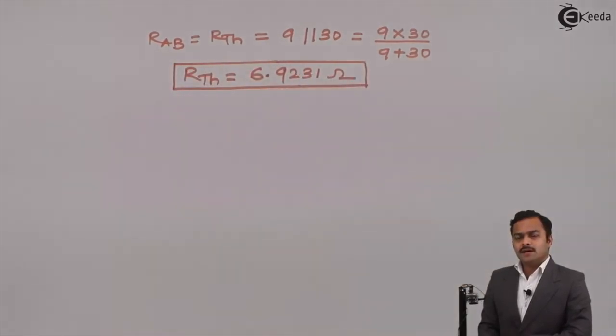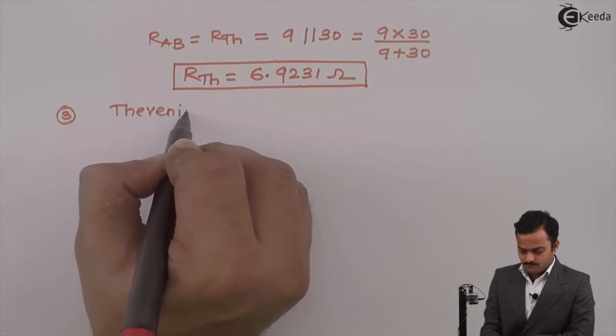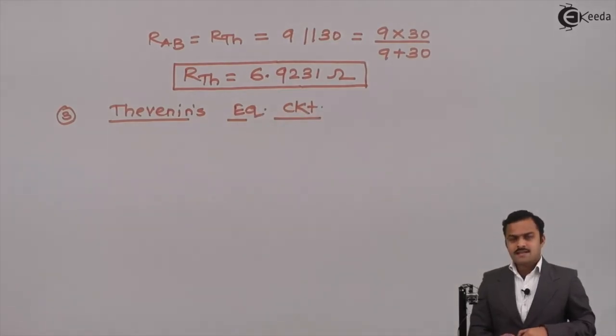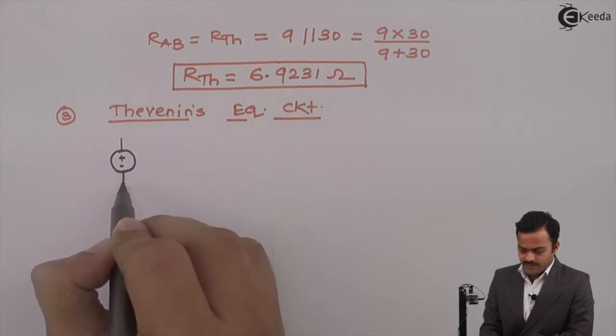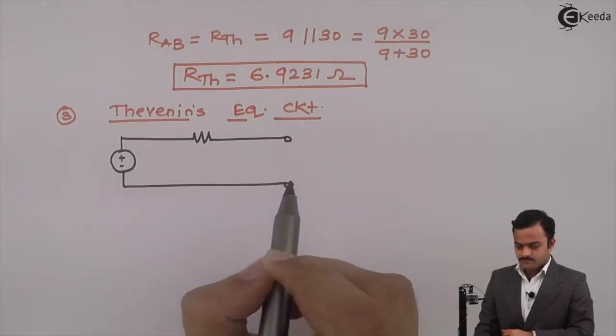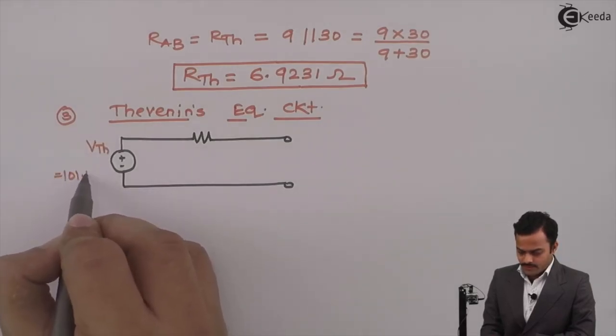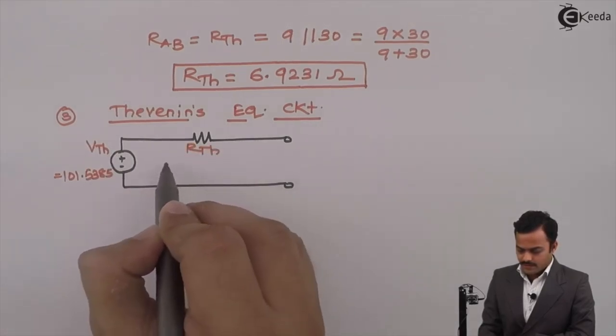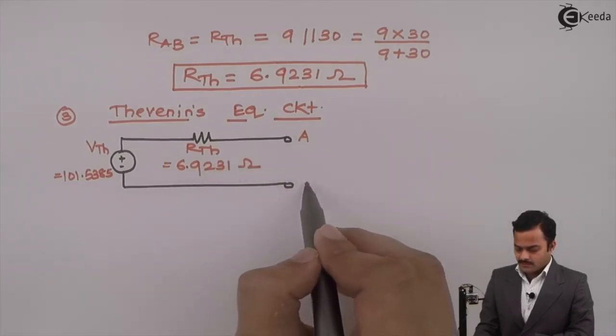Let us use VTH and RTH in order to find out Thevenin's equivalent circuit. As I discussed earlier it will have a voltage source of VTH value in series with a resistance which is RTH. VTH we have calculated 101.5385 volt and RTH we calculated 6.9231 ohm and these are the terminals A and B.